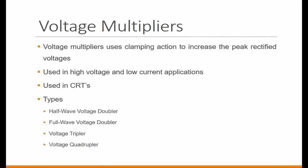So we use the clamping action, multiple clampers. Heavily, these are used inside the televisions, half-wave, full-wave rectifiers. But these are called as doublers, triplers, quadruplers. You can keep on going.